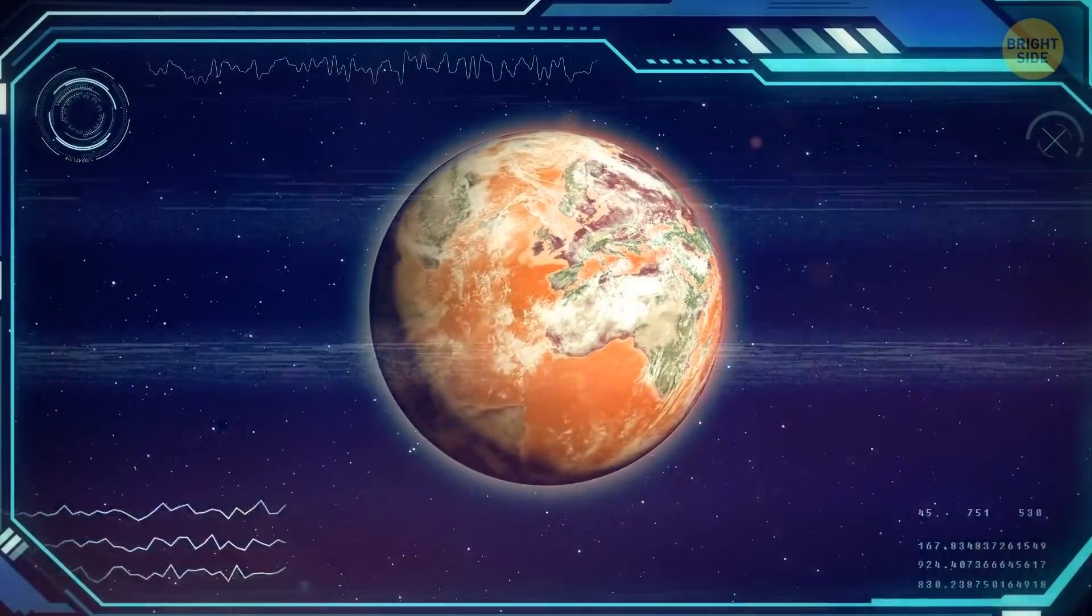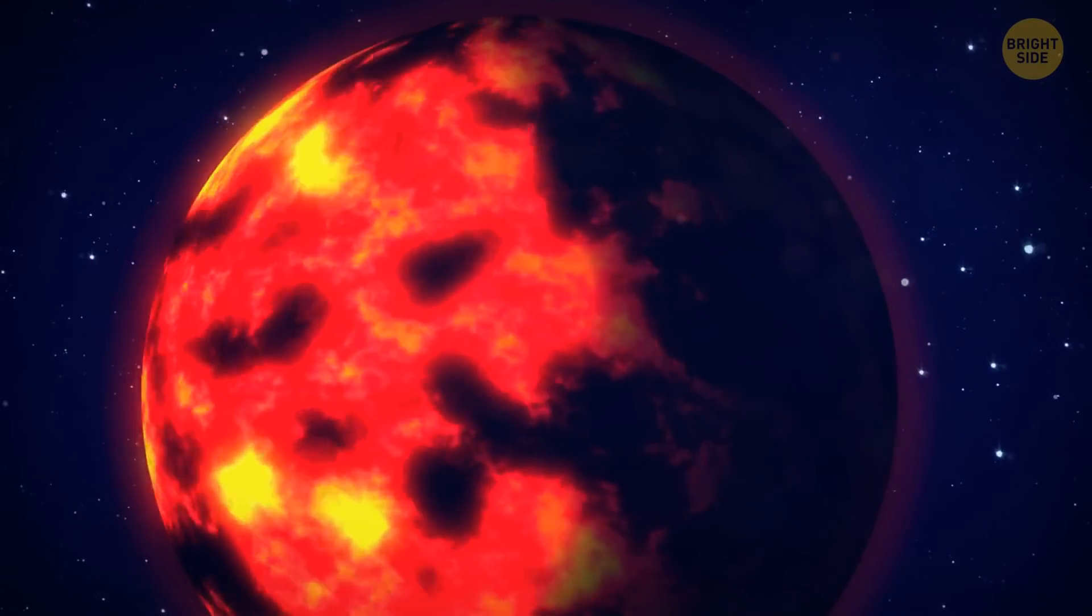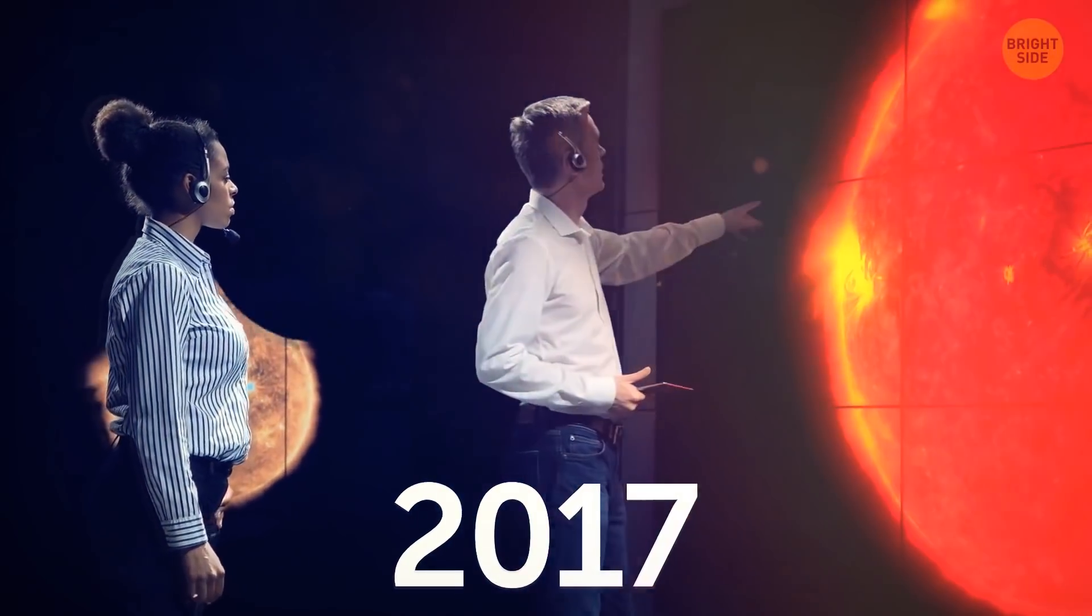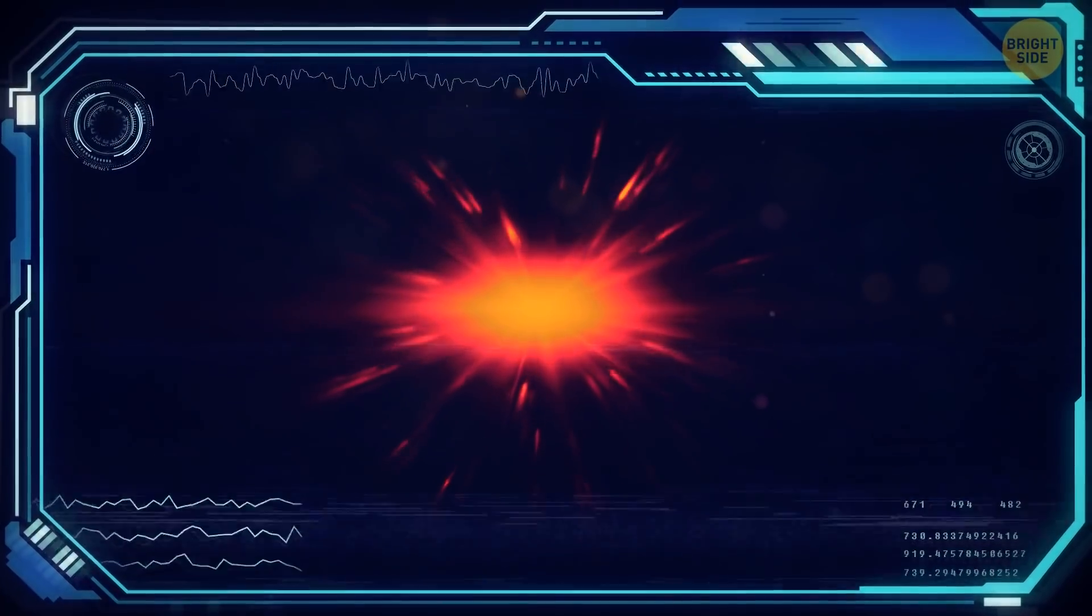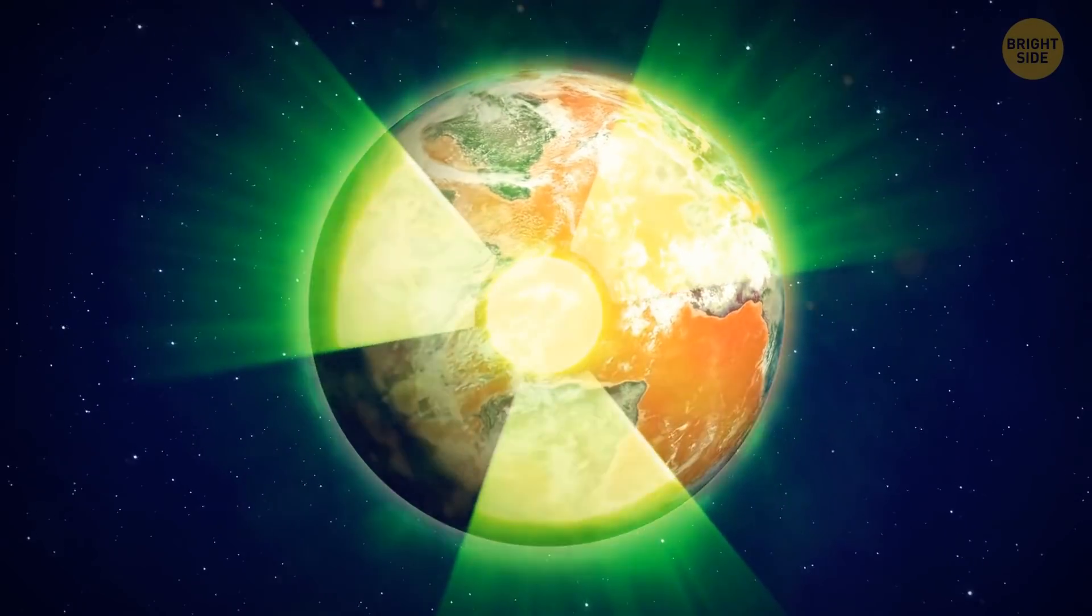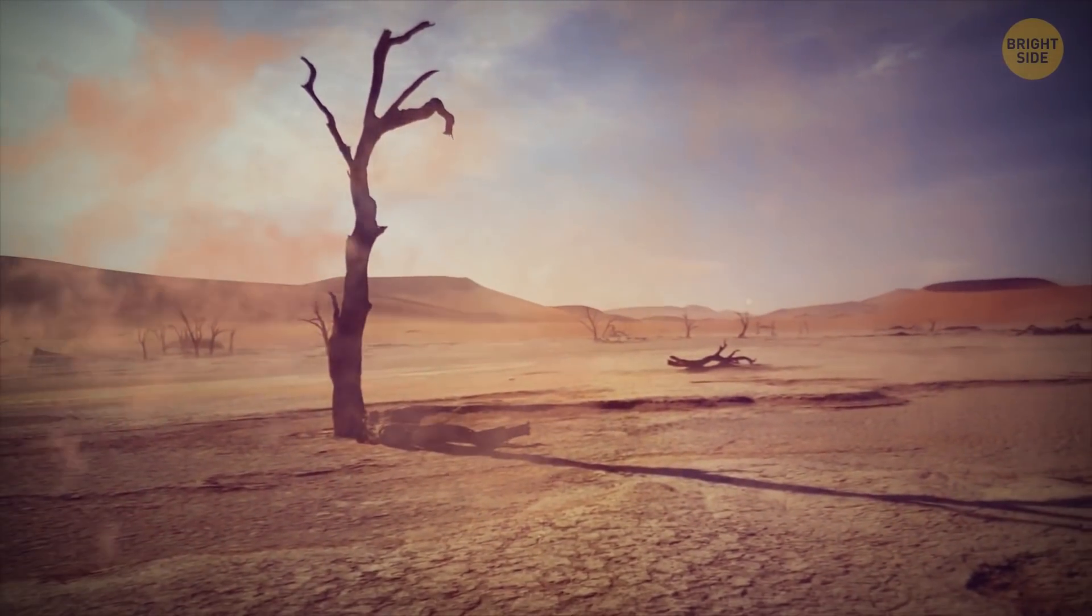But further observations of the planet make it doubtful. The host star is very unstable. Its brightness changes too frequently. In 2017, astronomers witnessed a catastrophic flash. The star increased its brightness by 1,000 times for 10 seconds. The planet received an enormous amount of radiation. If there had been life there, that flare would have wiped it out completely.